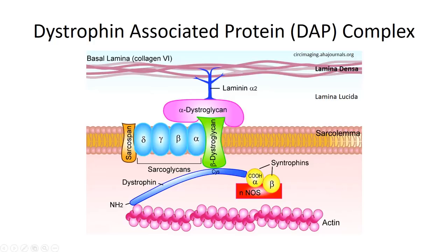It's important to note that each of these individual connections is incredibly weak, but when you combine thousands of them in series — think of a Velcro suit. Peeling Velcro is easy because you're only tearing a small number of connections at a time, but when you have a large enough surface area contact, it can be pretty strong. An understanding of the DAP complex is incredibly important in musculoskeletal medicine. The dystrophin protein and associated gene got their name because they were first identified for their role in Duchenne's muscular dystrophy. There are a variety of different muscular dystrophies, each associated with a specific mutation to one of the proteins in the DAP complex.